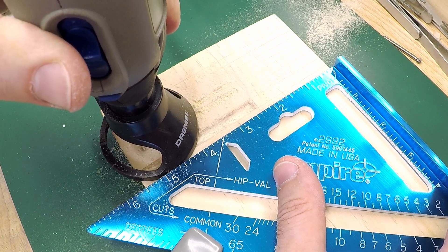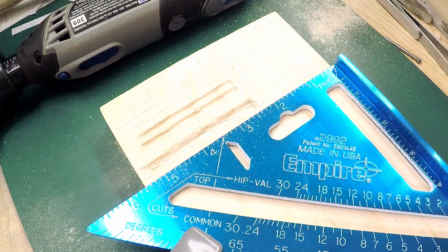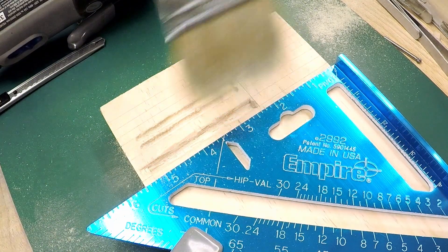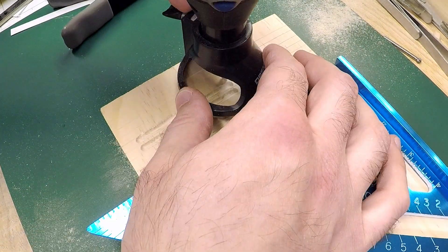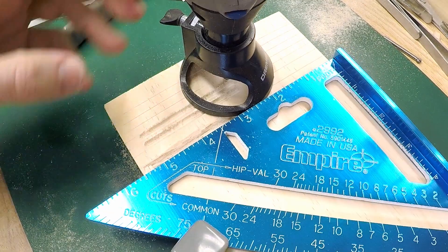And again, take your time with this. You don't need to apply a lot of force. Most rotary tools don't have a lot of torque or a lot of turning force. So really you're going to have to take your time, especially with a harder material, if you're using certain plastics or you're using a much harder wood.